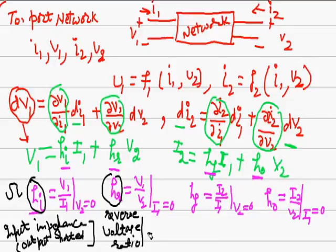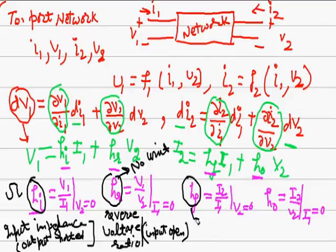HF is forward current gain or forward current ratio, and it is I2 upon I1. It also has no unit because it's a ratio of two similar quantities. Numerator and denominator both are currents, so having no unit.